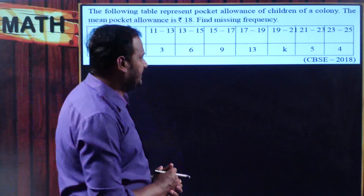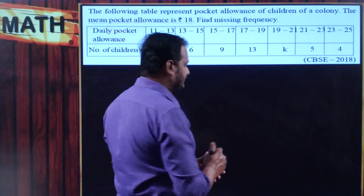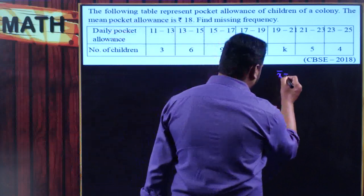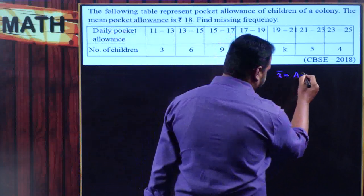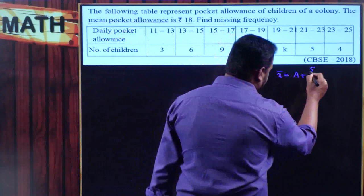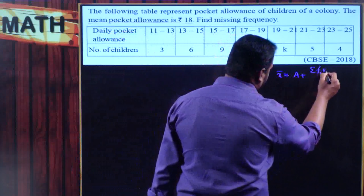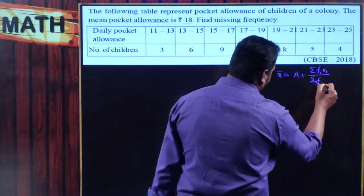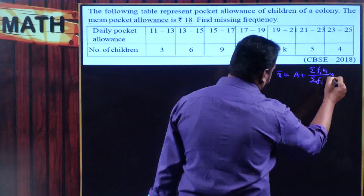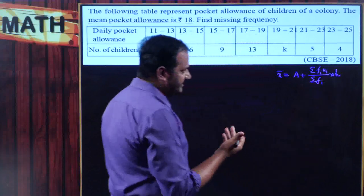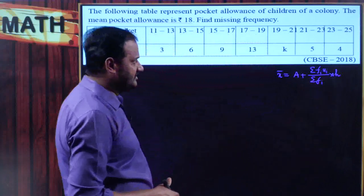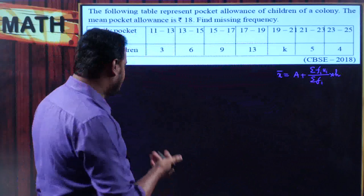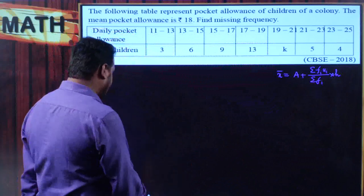Step deviation method — the formula is: x̄ = A + (Σfi·ui / Σfi) × h. We already discussed about that, so I am not going to explain more. Let us get into the problem.